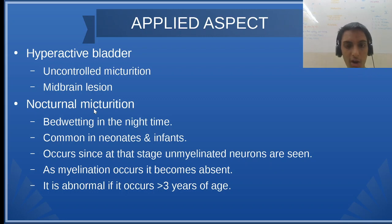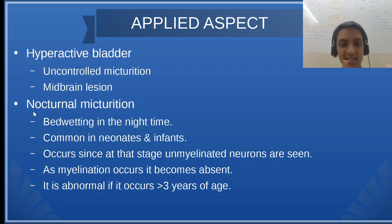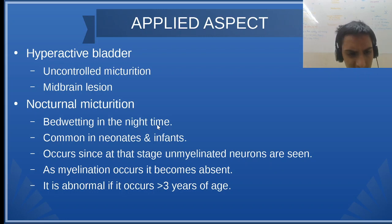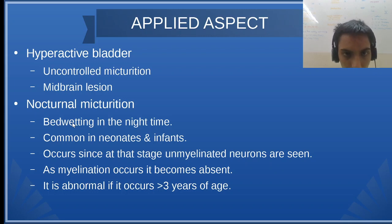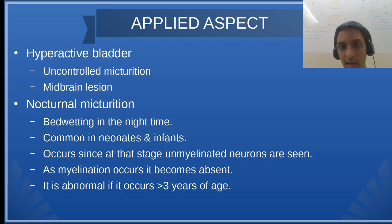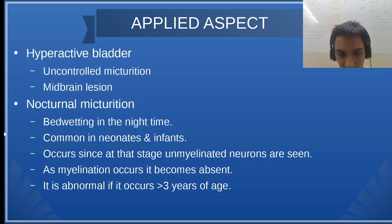Lastly, nocturnal micturition — nocturnal means night time. This is bed wetting in the night time, very common in small children who are in the infant stage, because at that time they have unmyelinated neurons supplying the bladder. As they grow in age, those neurons will become myelinated. If it still happens around 3 years of age, it is considered abnormal and indicates some problem.